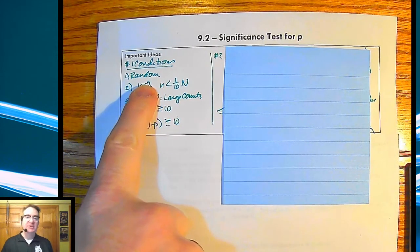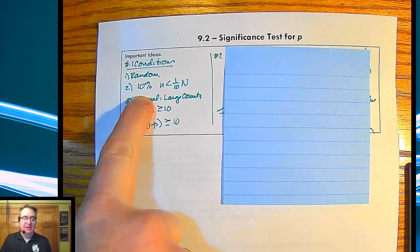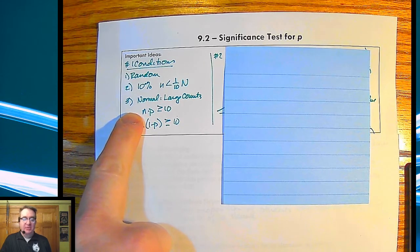Anyway, three conditions are not really a surprise. We need to have it be random. We need it to meet the 10% rule so it's independent. And then we need to also have the normal, make sure it's normal for large counts.